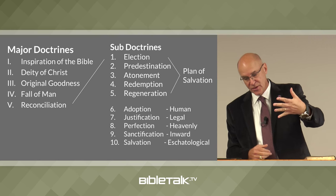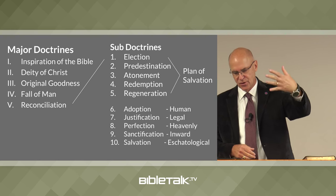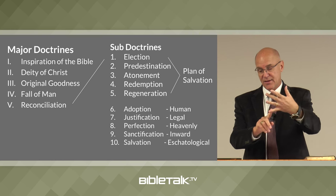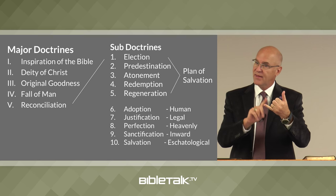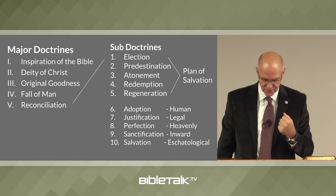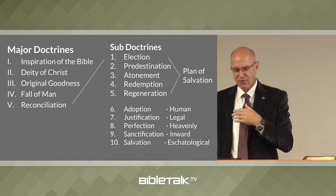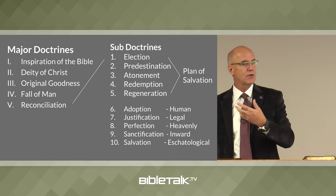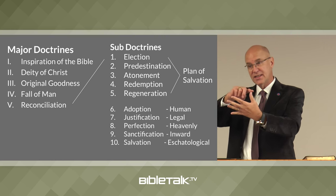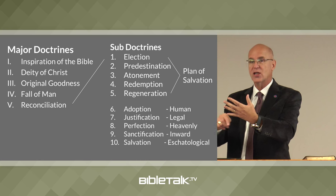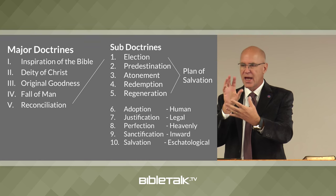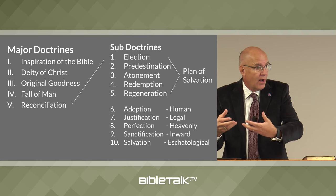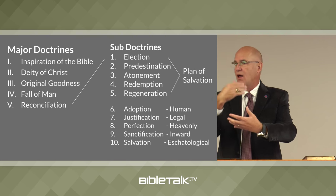We had the first five major doctrines: inspiration, deity of Christ, original goodness, fall of man, reconciliation. When we hit that fifth major doctrine, we said there are ten sub-doctrines that explain that fifth reconciliation doctrine. The very first five sub-doctrines — election, predestination, atonement, redemption, and regeneration — those first five sub-doctrines are the plan of salvation. That's God's plan, and those five sub-doctrines explain how God did that reconciling of man to himself.